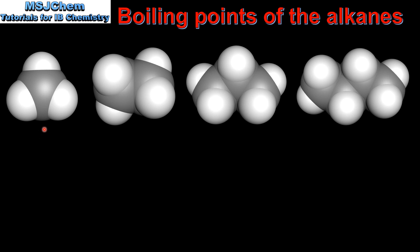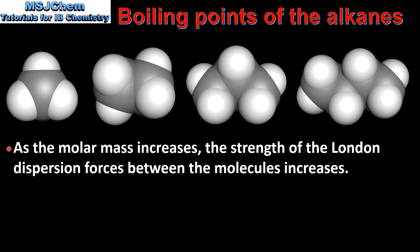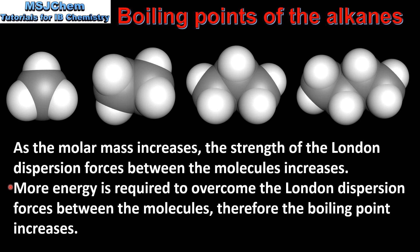As the molar mass increases so does the boiling point. Here we have space-filling models of the first 4 members of the alkane homologous series from methane on the left to butane on the right. As the molar mass increases, the surface area of the molecule also increases. This leads to an increase in the strength of the London dispersion forces between the molecules. More energy is required to overcome the London dispersion forces between the molecules, therefore the boiling point increases.